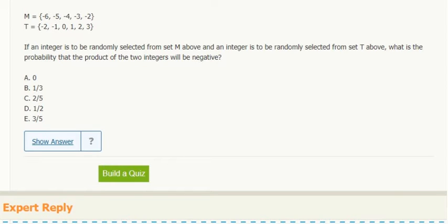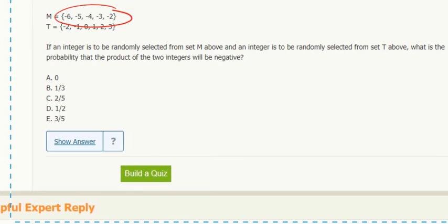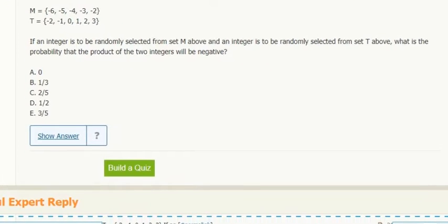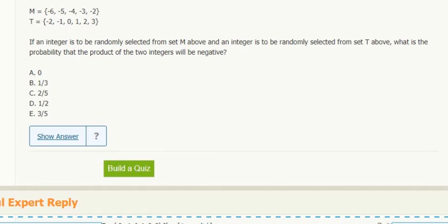So probably the product of the two integers will be negative. Okay, so if I look at that, I say, well, all of these are negative. That's a really high probability. The other number is going to be negative.